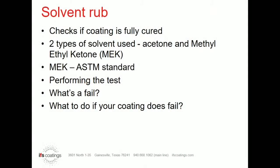Next, I'd like to talk about solvent rubs. The main purpose of checking a coating with solvent rubs is to see if that coating is truly cured or not. The only other way to check cure is to physically send a part and have an analysis run on it — we all don't have time for that, so this is a good hands-on, easy test that doesn't take a lot of ability or equipment to perform. The two common solvents used are acetone and MEK — methyl ethyl ketone. In ASTM standards you'll usually see it noted as MEK, but acetone is a common test as well.